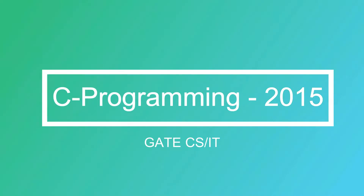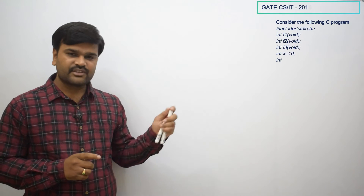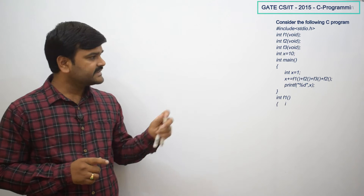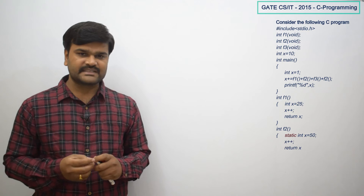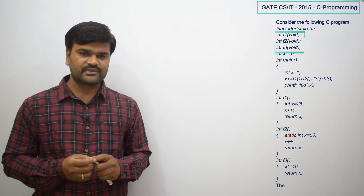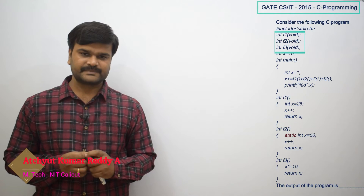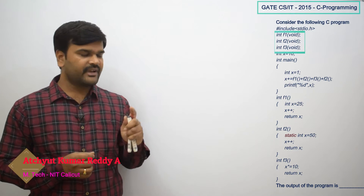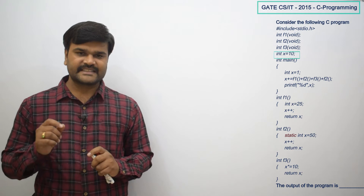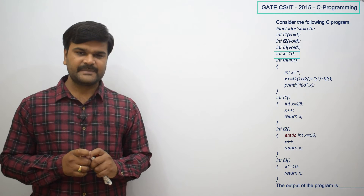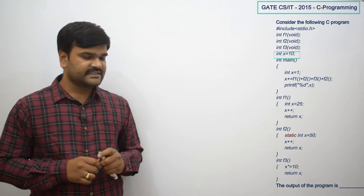This is a 2015 GATE CSIT question from the C programming subject. In this question, if you observe the first few lines, we are going to have three functions: f1, f2, and f3. Initially, you have their declarations here. And we have one global variable, that is x equal to 10. And then we have a main function.